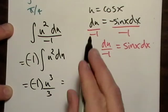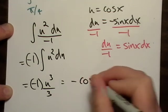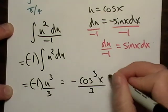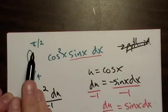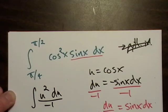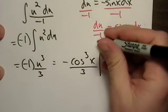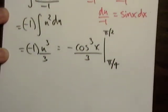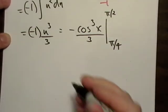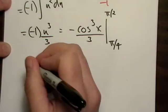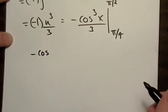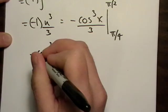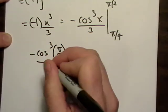Now that's all equal to negative cosine 3X over three. Now we also remember our original integral was over an interval, so we're going to have to go ahead and evaluate that too.